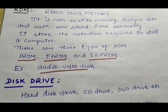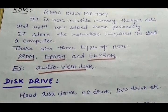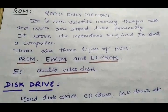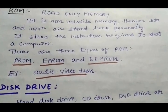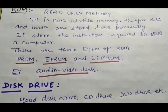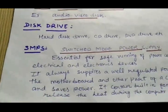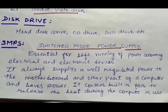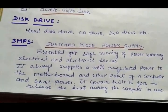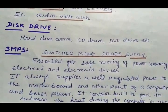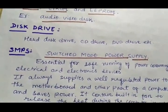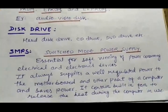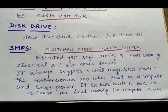The next component is the disk drive, which includes the hard disk drive, CD drive, and DVD drive. The hard disk drive contains the hard disk, which is the most important storage device. The CD drive is used to run, read, and write CDs, and the DVD drive is responsible for running, reading, and writing DVDs. The next component is SMPS — Switched Mode Power Supply. SMPS is very important for the safe running of electrical and electronic devices. It always supplies well-regulated power to the motherboard and other parts of the computer, saves power, and contains a fan to release heat during use.